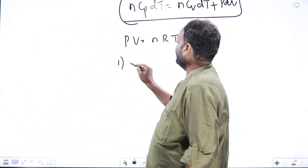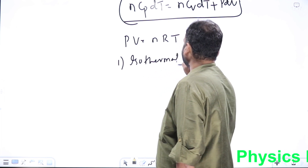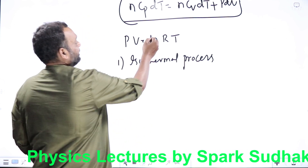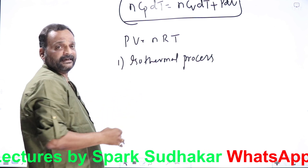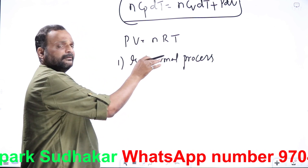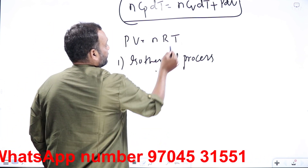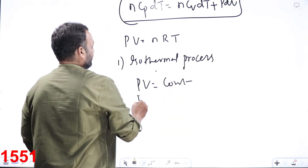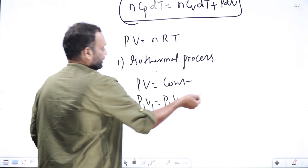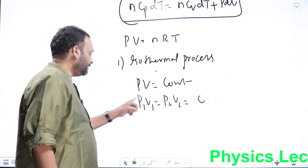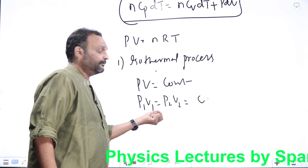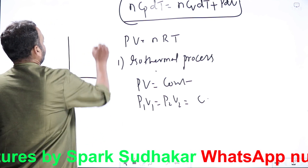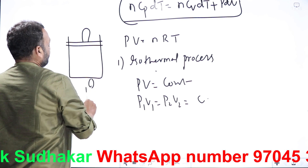For an ideal gas, PV equals nRT. In an isothermal process, temperature is constant, n is constant, and R is a gas constant, so PV equals constant. This means P1V1 equals P2V2 — initial pressure times initial volume equals final pressure times final volume.